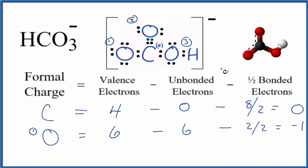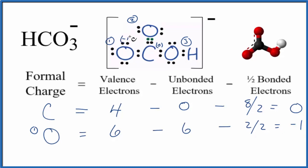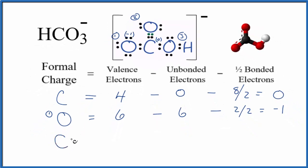For oxygen number two, we have six valence electrons because it's oxygen—it'll always be six. Then we have unbonded electrons: two, four.